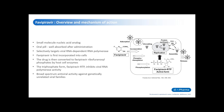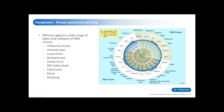The triphosphate form, which is favipiravir-RTP, is the actual compound that inhibits viral RNA polymerase activity. We like this drug specifically because it has very broad-spectrum antiviral activity against genetically unrelated viral families, which we'll get into in the next slide.